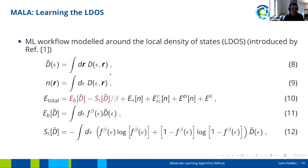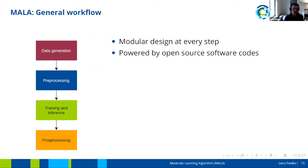This is essentially what MALA does: train models that predict the local density of states for systems of interest, and then access the total energy or other quantities like the electron density and density of states through post-processing. This leads to a general workflow — data generation, pre-processing, training networks, performing inference, and post-processing results. MALA is a Python package designed to be modular at every step so that different open-source codes can be used and different calculation or processing techniques can be applied.